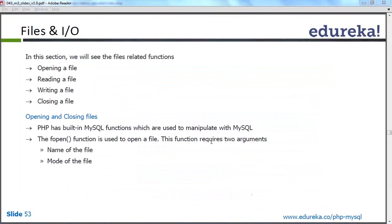When we open a file, it accepts two parameters. One is the name of the file or simply the complete path of the file, and second is the mode of the file — whether we want to open the file in read mode, in write mode, or in append mode.